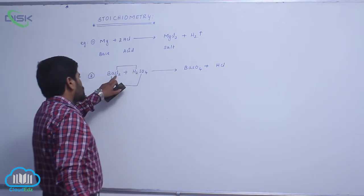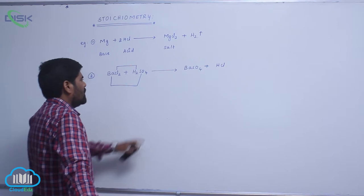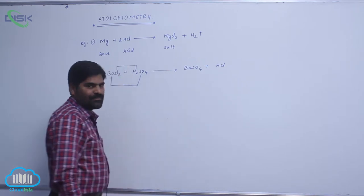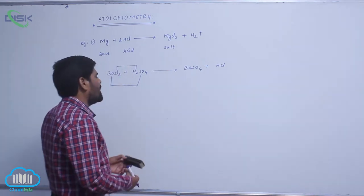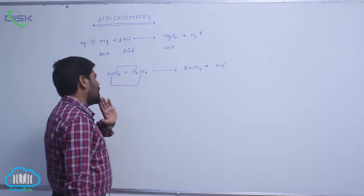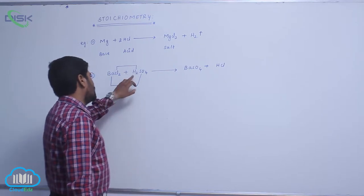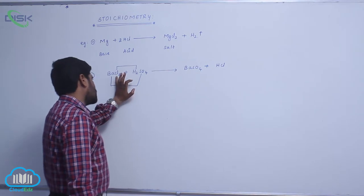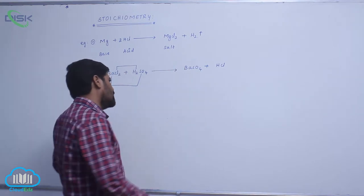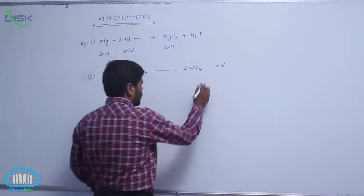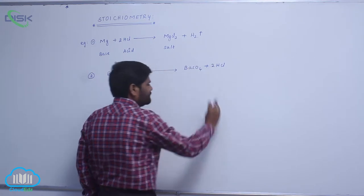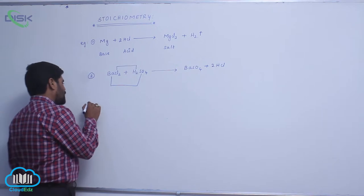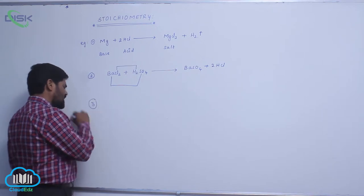Now, on the product side there are 2 chlorines and 2 hydrogens, 1 sulphate ion, and 1 barium — these are balanced. However, the hydrogens are not balanced: from the reactant side there are 2 hydrogens and 2 chlorines, but on the product side there is only 1. So a further balancing step is required.